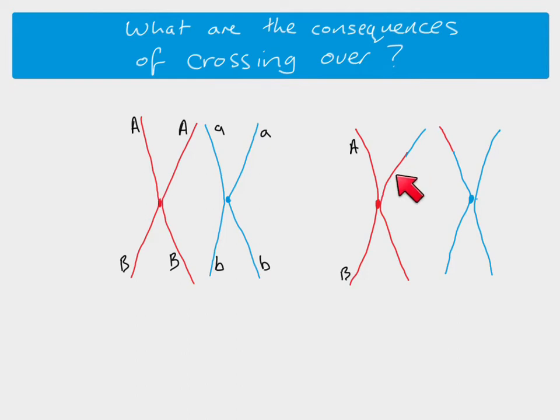But then this chromatid here, because of this exchange during crossing over, we now have the recessive allele for gene A and then the dominant allele for gene B. And then on the other chromosome, we've now got the dominant allele for A on the same chromatid as we have the recessive allele for B. And this chromatid is unchanged.